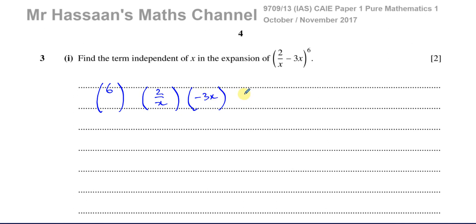We've got to find the term such that the x's cancel out. You have 2 divided by x, and you have minus 3x. The numerators are going to be multiplied with each other, and the denominators are going to be multiplied with each other. For the x's to cancel out, one must be in the numerator and one in the denominator, raised to the same power. But those powers must add up to 6 — the powers always add up to the main exponent.